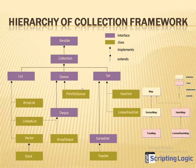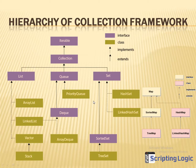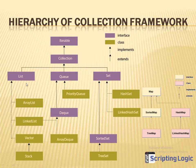Collection is the only parent, and whatever methods we have in collection, all the same methods are applicable to its children. There will be small differences between each class or interface — some properties will be different, some background things will be different. If you understand one collection, understanding the rest is not that difficult.